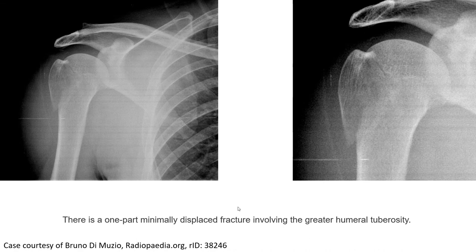This is also an example of a proximal humerus fracture, showing a minimally displaced fracture involving the proximal humerus.